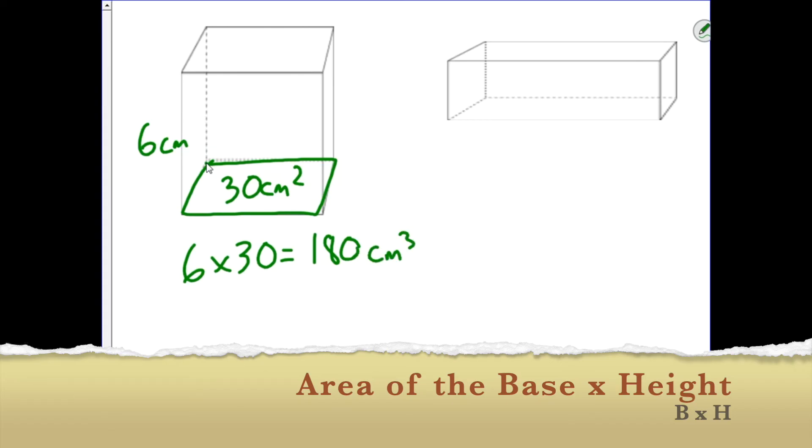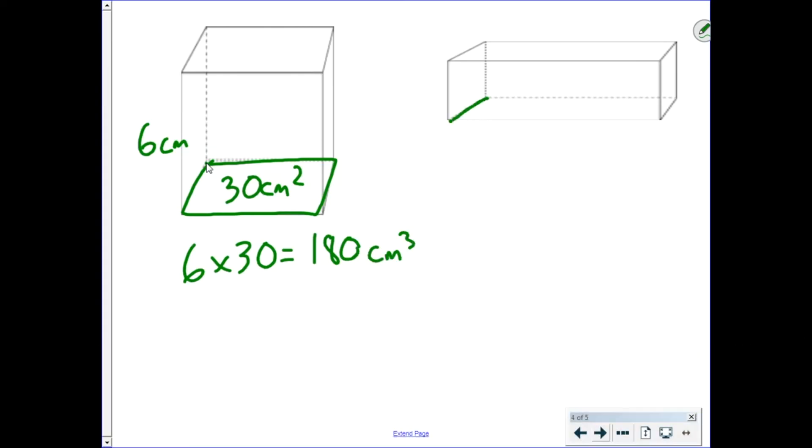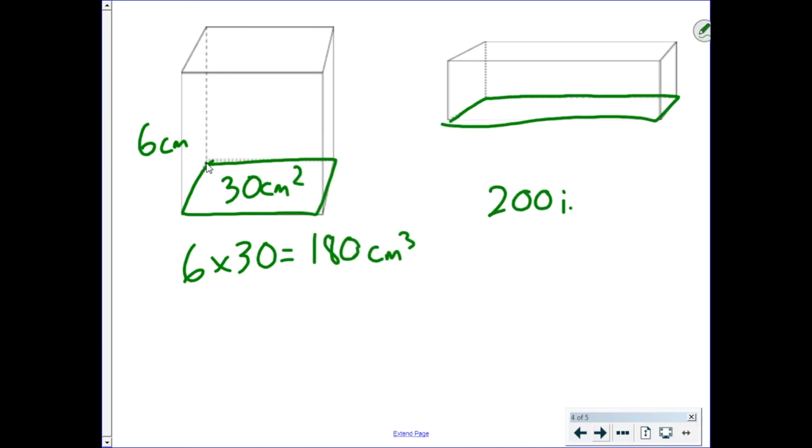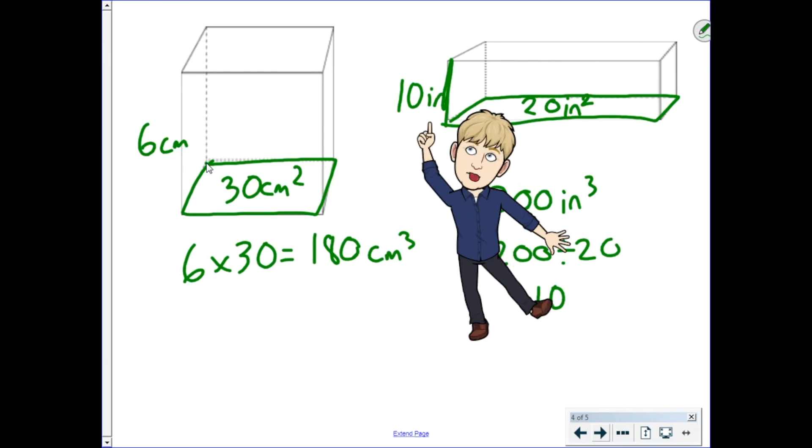However, what if they gave you the volume and the area of the base? The volume is 200 cubic inches, and the area of the base is 20 square inches. Well, again, if they give you the volume, you're going to need to divide 200 divided by 20, or 10. So the height must be 10 inches.